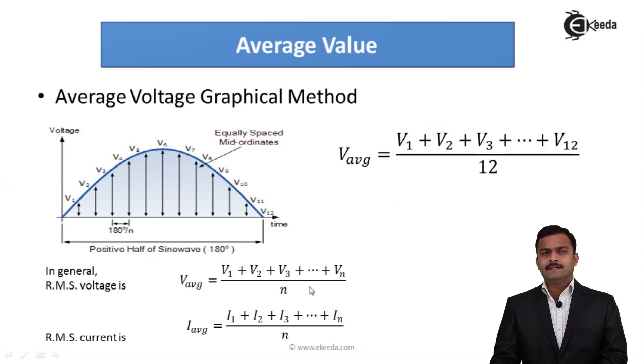Same way, instead of voltage if I want to get average current, it is given by I_average equal to I1 + I2 + I3 up to In divided by n. So this is one way of calculation of average value.